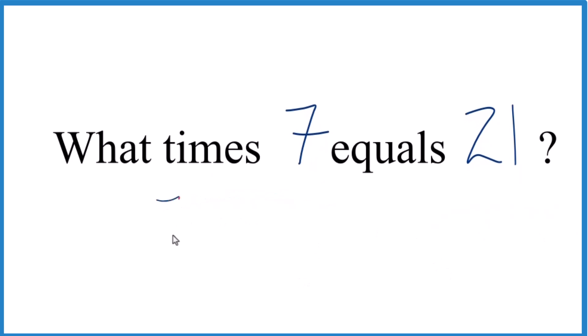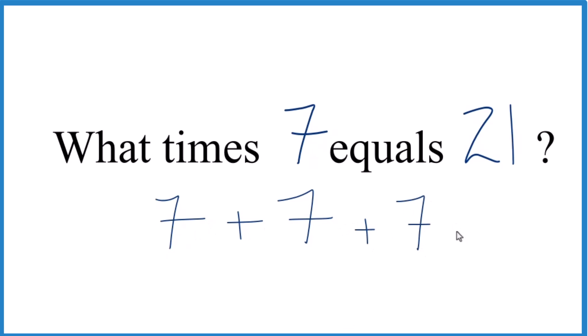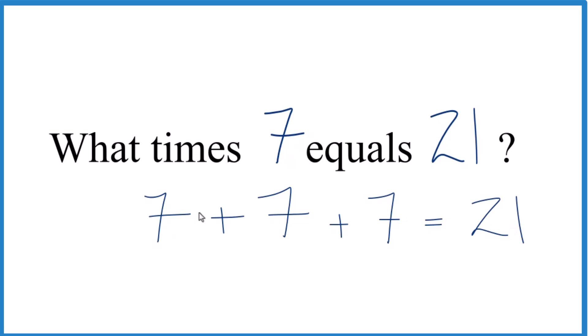The first way is you could just start adding 7 until you get to 21. 7 plus 7, that's 14, plus 7, that equals 21. And we have 1, 2, 3. So 3 times 7, that equals 21.